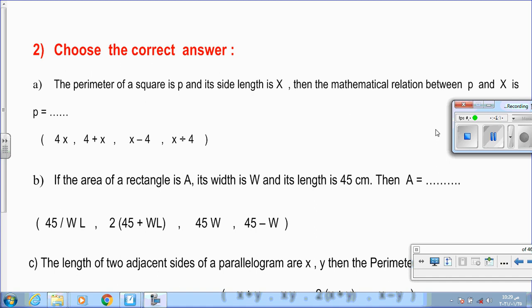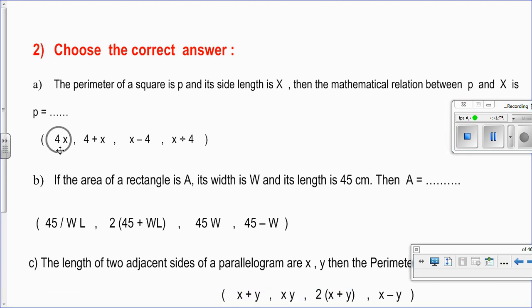Here we have questions. Choose the correct answer. Question A: The perimeter of a square is p and its side length is x. Then the mathematical relation between p and x is. We know the square has 4 equal sides. The perimeter equals side length multiplied by 4. If the side length is x, so the perimeter will be 4 multiplied by x, which is 4x.